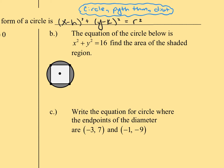Let's jump into our first example. We want to find the area of the shaded region and we're given that the equation of this circle is x squared plus y squared equals 16. This part of the equation right here is telling us automatically that the center of this circle is at 0, 0, so you could draw in that x-y axis if you'd like. This other part is telling us that the radius of our circle is 4.